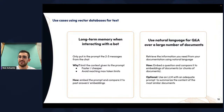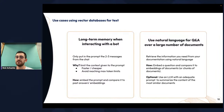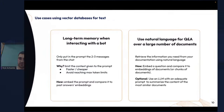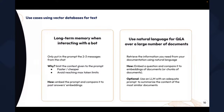Another famous use case is Q&A over a large number of documents. If you have large textual documentation and want to retrieve information using natural language, you embed all your documents or chunks of them, then ask a question, embed it, and compare it to your documents. Optionally, you can use an LLM at the end — which is very often done — to get your most similar documents and answer your questions.